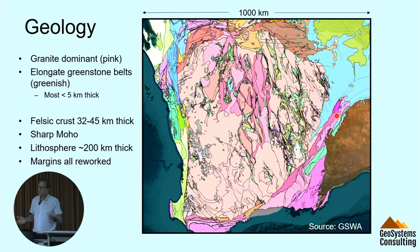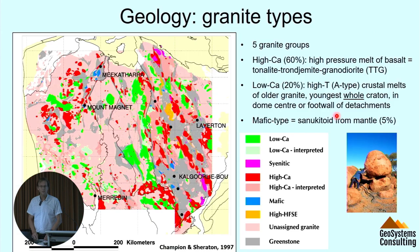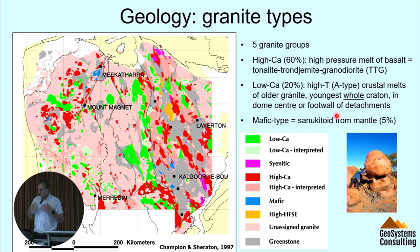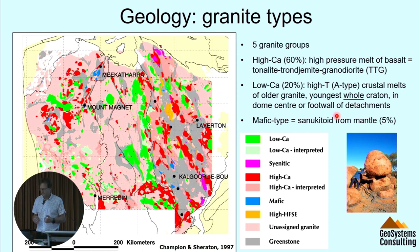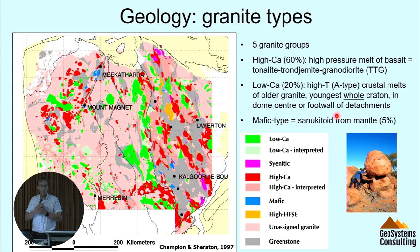The margins are all reworked — the Yilgarn was likely to have been bigger and part of some other supercontinent in the past. Starting with the granites: this is an old map from Dave Champion and John Sheraton where they defined the main granite types. We have the high calcium granites, making up about 60% of the granites. These are high pressure melts from deep down, 60 kilometres plus — tonalite, trondhjemite, granodiorites, TTGs. The other class is the low calcium granites, which are melts of previous crust — shallower melts that occur late in the piece, reflecting the cratonisation and the losing of heat from the Yilgarn. We see these low calcium granites in all Archean terrains and they mark the cratonisation.